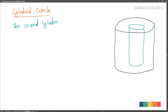We connect the inner cylindrical shell to the battery's positive terminal and the outer shell to the negative terminal. When you switch on the battery setup, the inner shell develops positive charge all around its surface, and the inner surface of the outer shell develops negative charge.